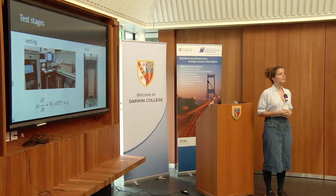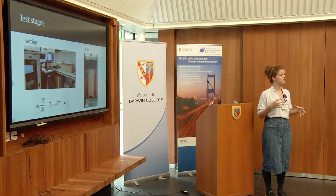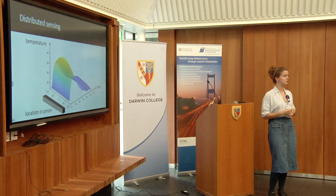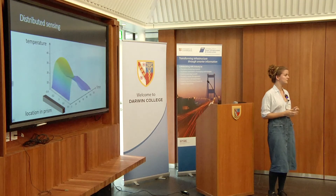The thermal properties of the concrete can then be found from the general heat conduction equation, which is simplified based on the geometry and the test stages implemented. As shown in the image on the left, this test has greatly benefited from the sensing and modeling technologies in the department, most notably distributed fiber optic sensing.